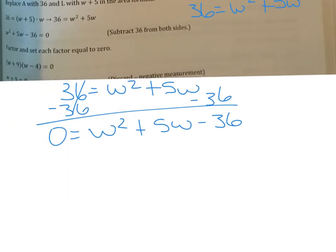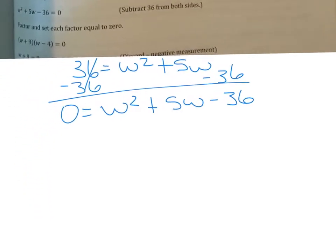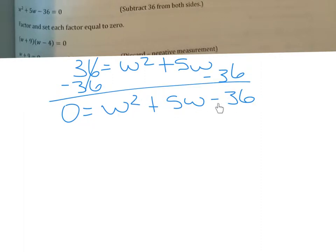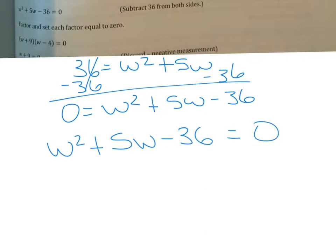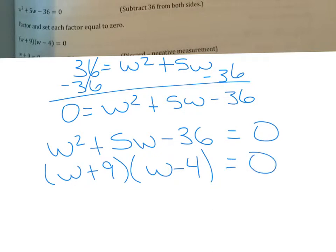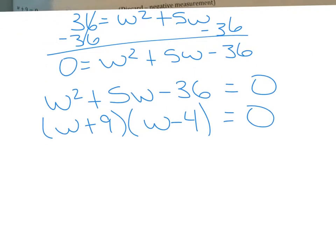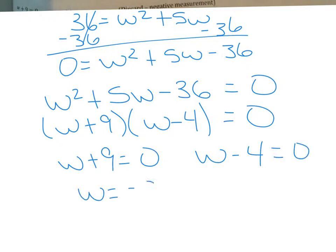Now to solve by factoring, we factor this trinomial. It's standard to put the polynomial on the left and zero on the right — same exact thing. When you factor this, you get w plus 9 times w minus 4. Set each factor equal to zero — that's the zero product property. Isolating w gives you w equals negative 9 or w equals positive 4.